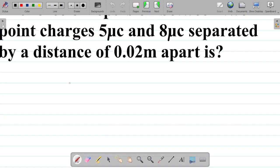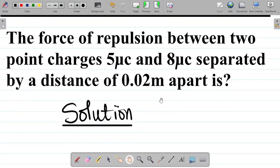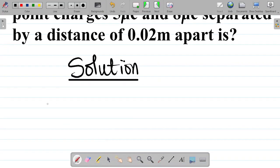Solution to this question. So let's take down the solution. Our first task here is to list out the given parameters. Now, in this case, we're given two point charges. So two charges, let's call them Q1 and Q2.